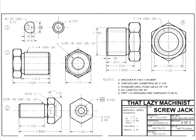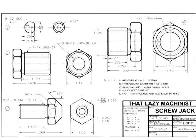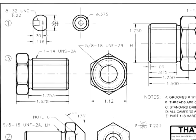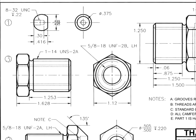Here is a drawing that incorporates specific tolerances — the detailed drawing of our screw jack project. Most dimensions are bilateral general tolerances given in the header. However, there are a few specific tolerances, and two of them are expressed as unilateral tolerances.